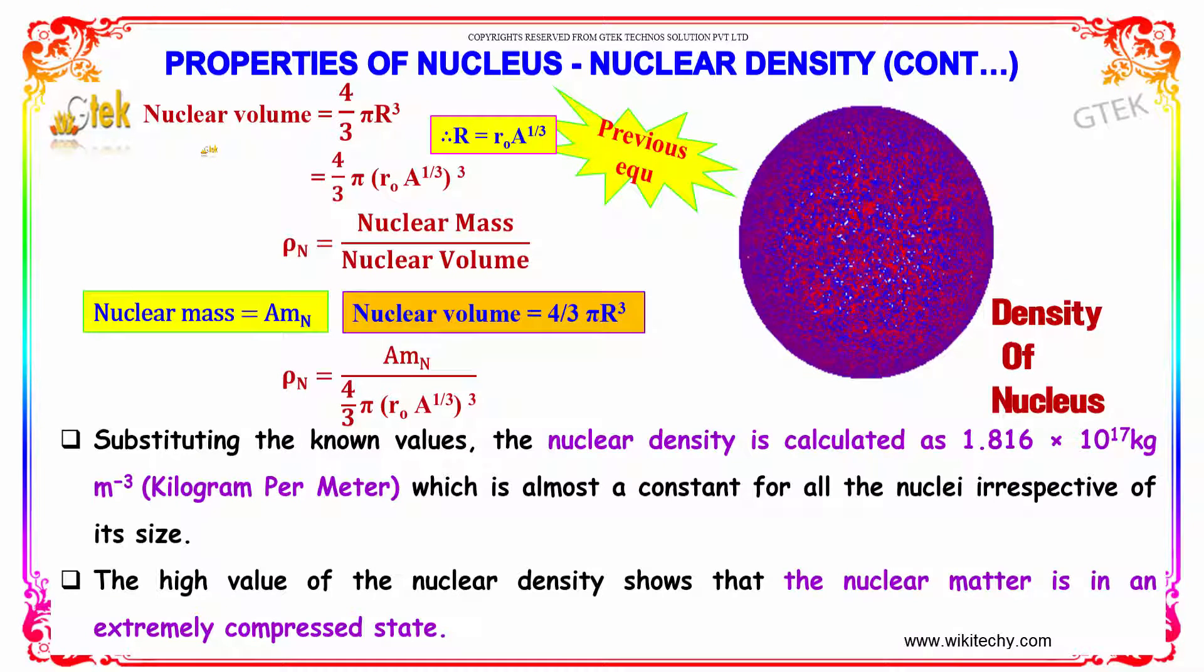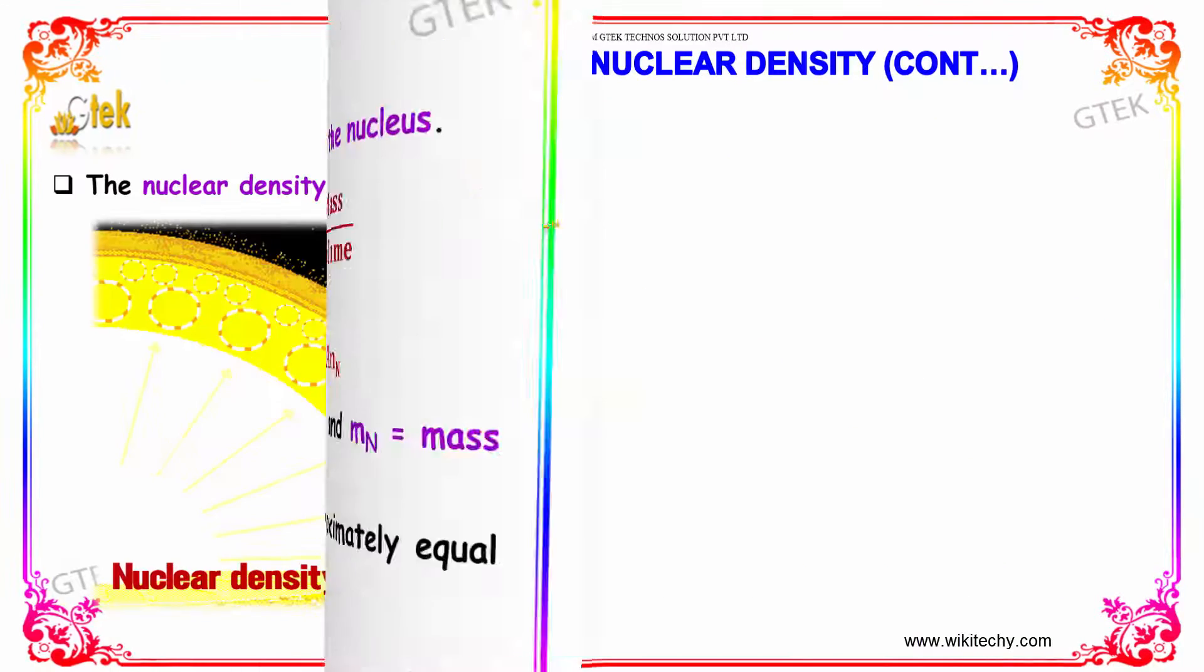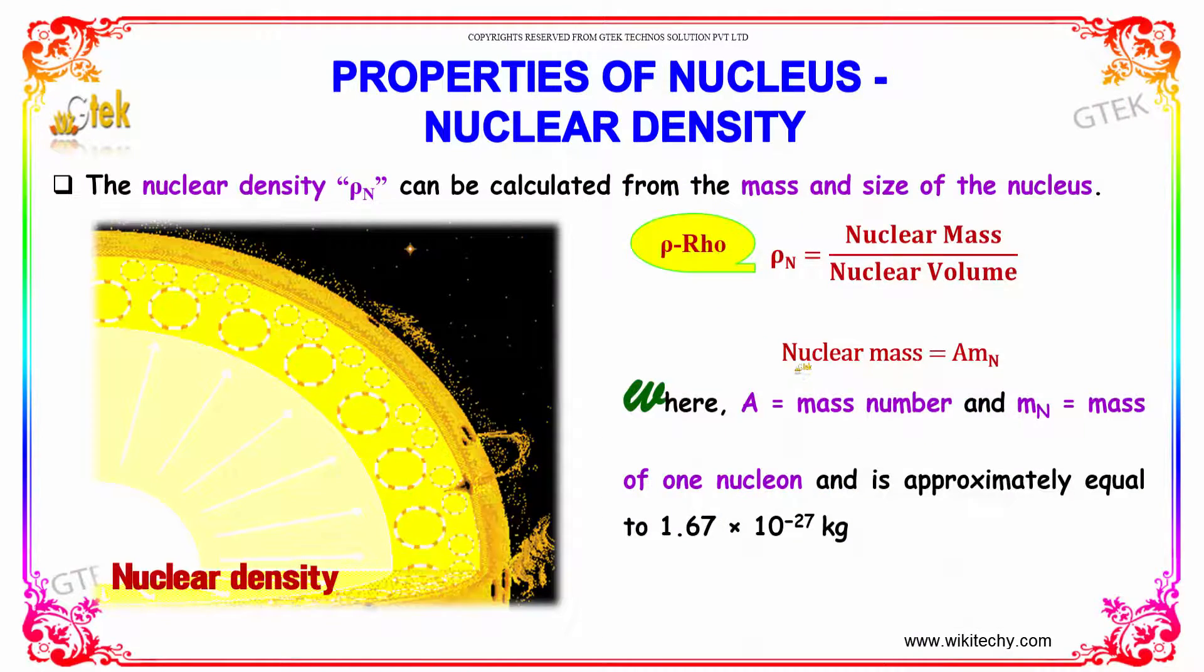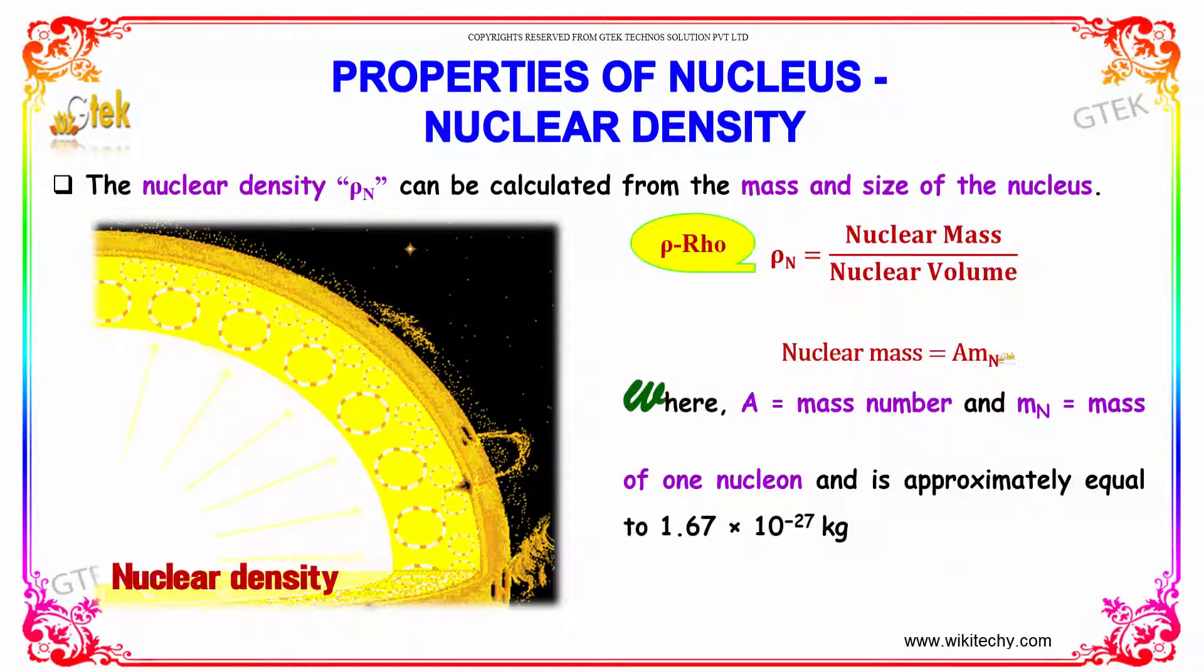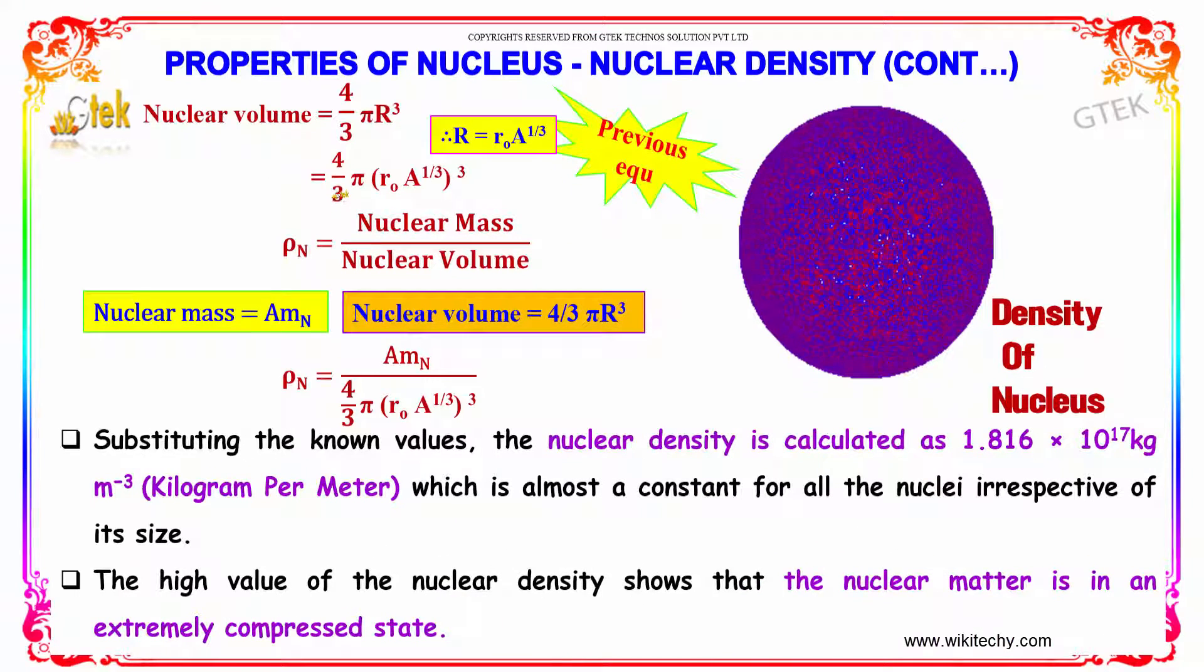The nuclear volume can be calculated by, since it is a sphere, 4 by 3 pi R cube. We have the nuclear mass as A into M. The radius R equals R naught into A power 1 by 3, as indicated before, power 3. So 3 and 3 get cancelled.